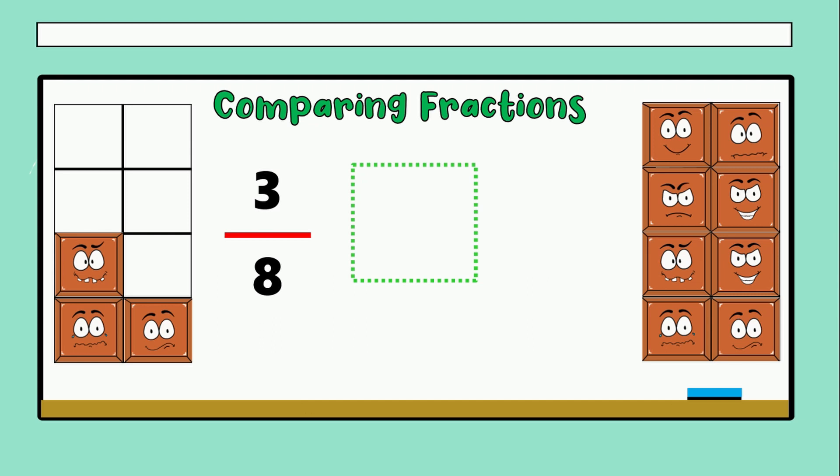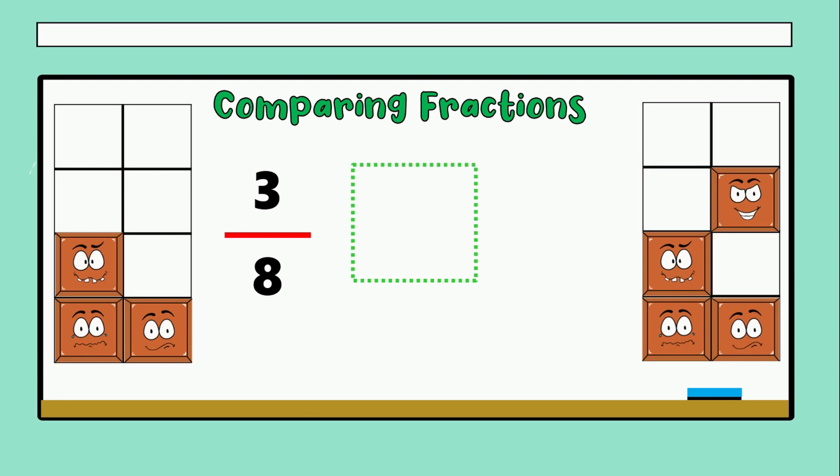On the right, how many? Disappear some. And how many there were? 8. Very good. And how many are there now? 4. Very good.